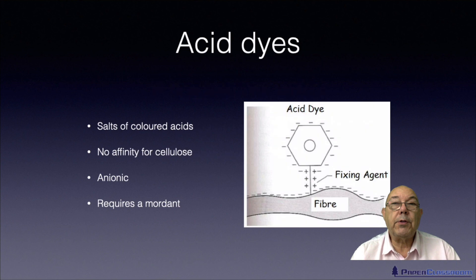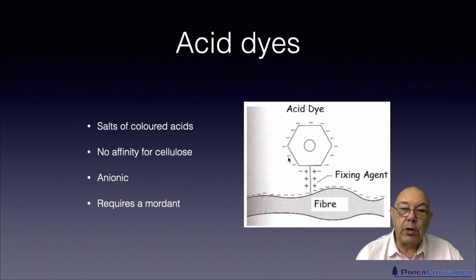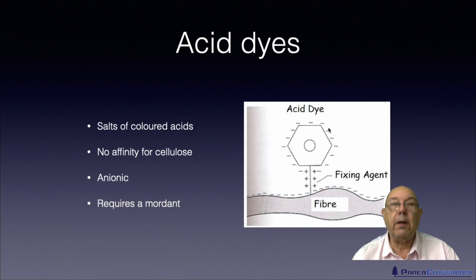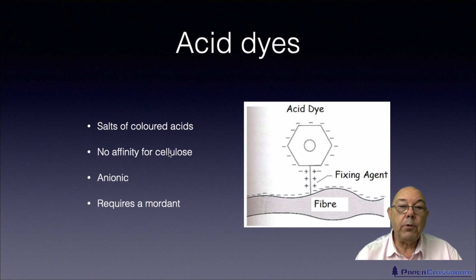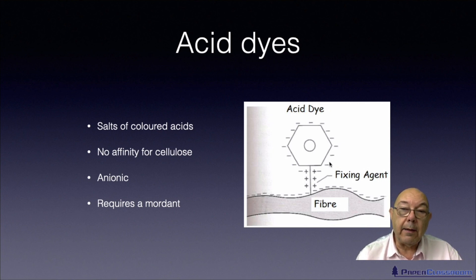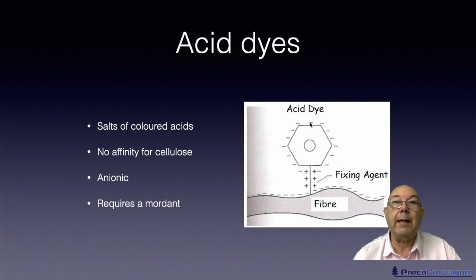So let's move on to dyes now. The first dye is an acid dye. We draw this shape as shorthand for a benzene ring — it's an organic molecule. Acid dyes are salts of coloured acids. They have no affinity whatsoever for cellulose, because they're anionic. As you can see, the dye is full of negative charges, so it's anionic.